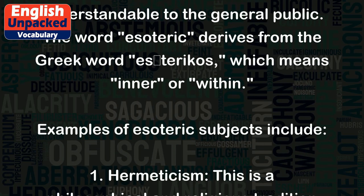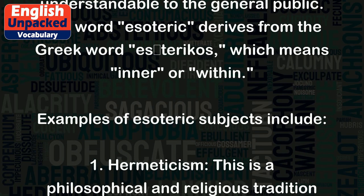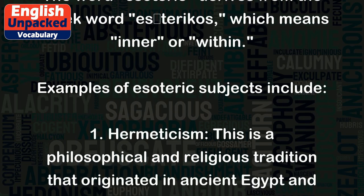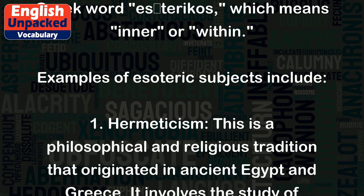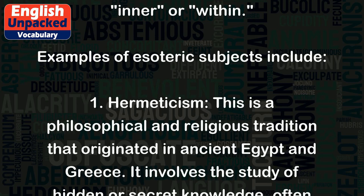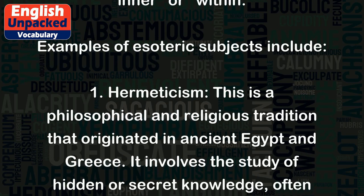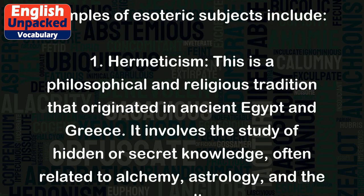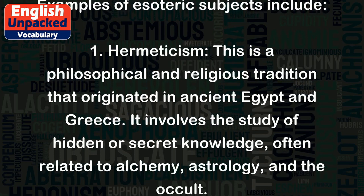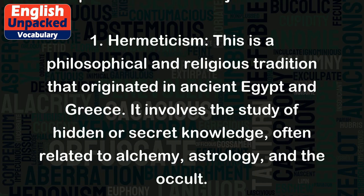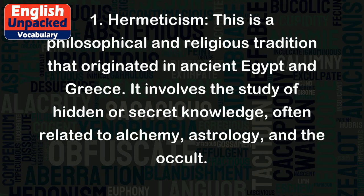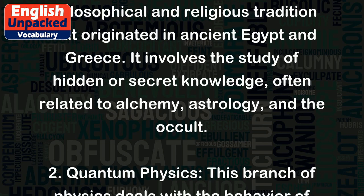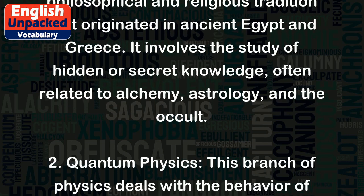Examples of esoteric subjects include: 1. Hermeticism — a philosophical and religious tradition that originated in ancient Egypt and Greece. It involves the study of hidden or secret knowledge, often related to alchemy, astrology, and the occult.